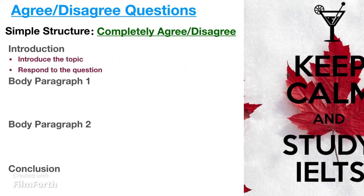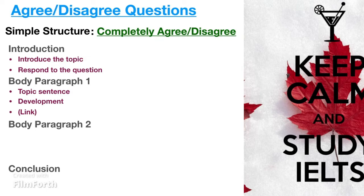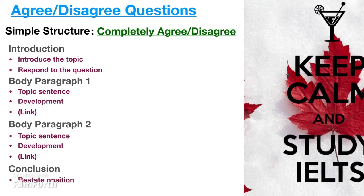The introduction needs to do two things: introduce the topic and respond to the question — that is, state whether you completely agree or disagree. Body paragraph one presents your first reason, with a topic sentence, development, and an optional link. Body paragraph two follows the same structure with a second reason. The conclusion restates your position and summarizes the ideas from both body paragraphs.